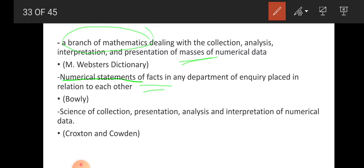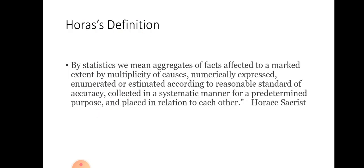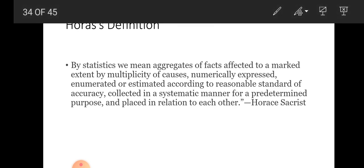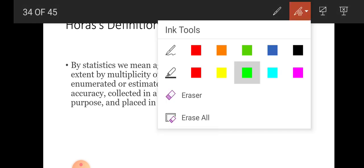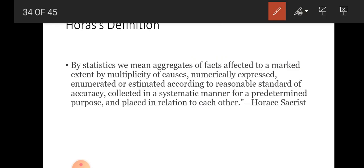Croxton and Corrin also considered statistics as a science — meaning it is a systematic, reliable, accurate, and verifiable study. They defined it as the science of collection, presentation, analysis, and interpretation of numerical data. Among the various definitions, Horace Sacrist's definition is considered the most widely accepted and comprehensive.